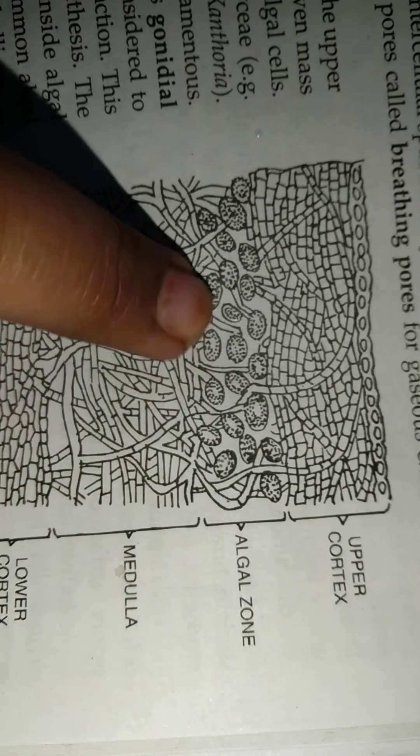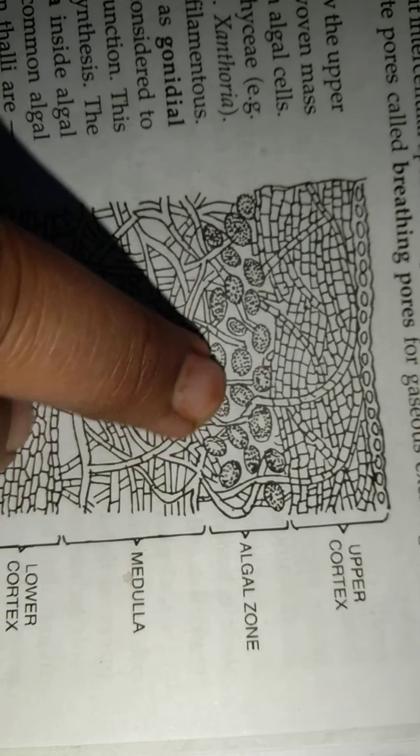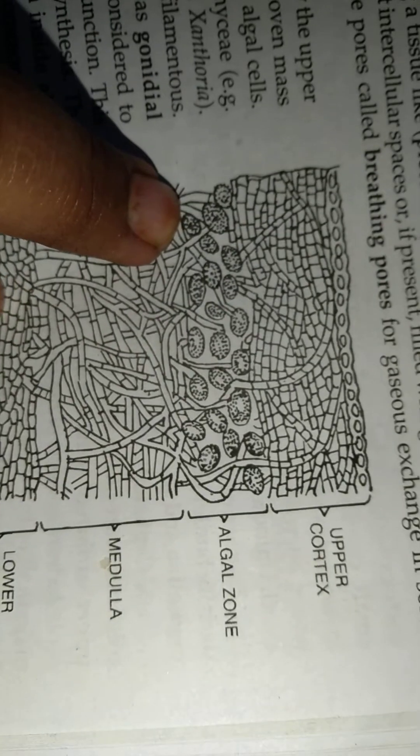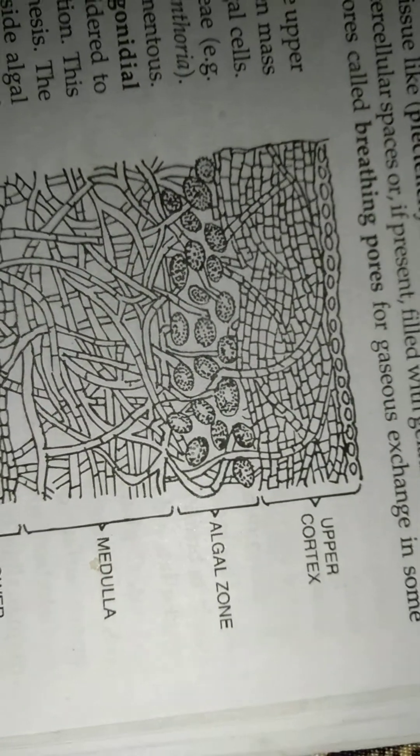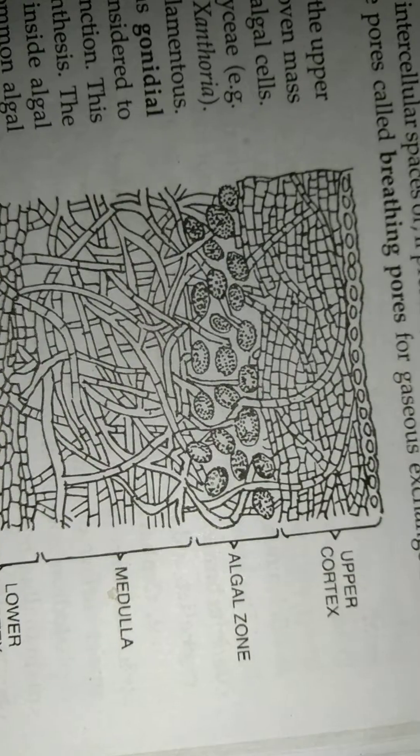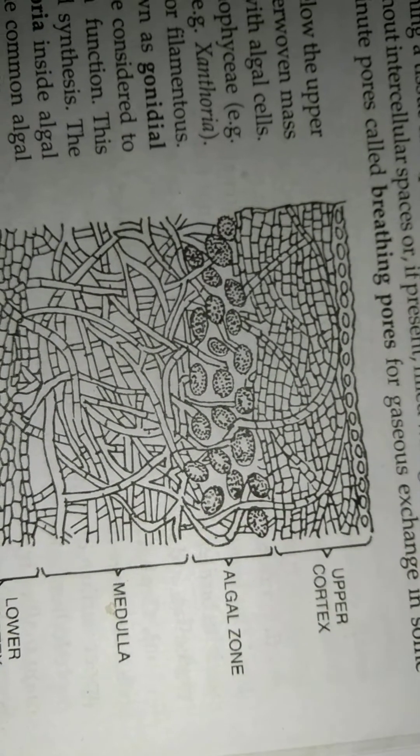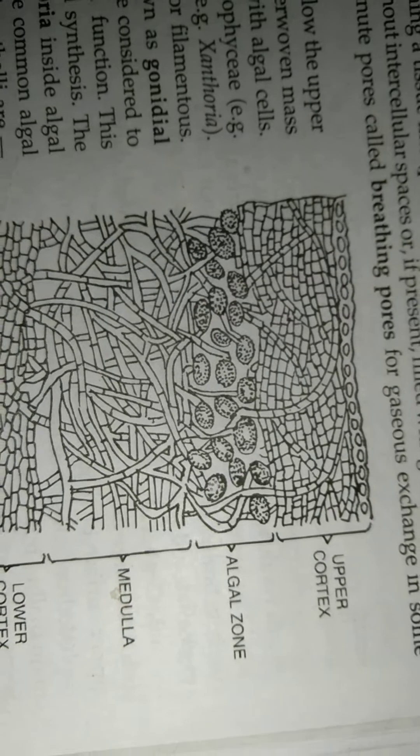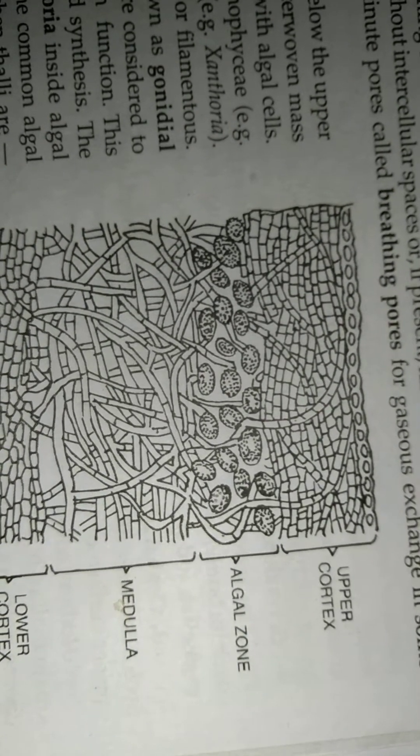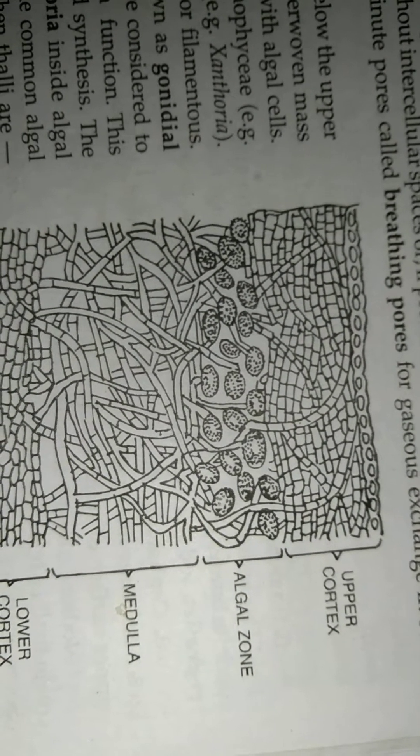This consists of loosely interwoven mass of fungal hyphae intermixed with the algal zone. Between fungal hyphae are the algal cells. Algae belong to the Cyanophyceae or Chlorophyceae. Algae may be unicellular or filamentous. This zone was earlier known as gonidial zone.